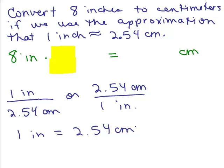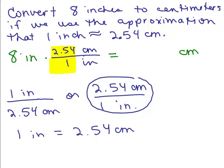So let's see. I need to get centimeters, so I need to use this. So I'm going to write 2.54 centimeters over 1 inch. And that way my inches will cancel. And I'm going to put a little squiggly line because it's not exactly equal but it's pretty darn close.